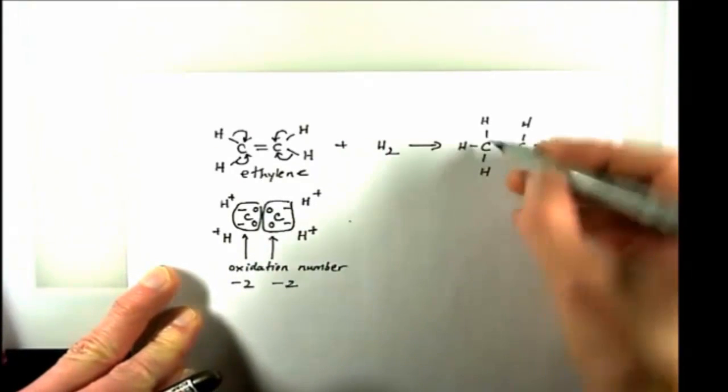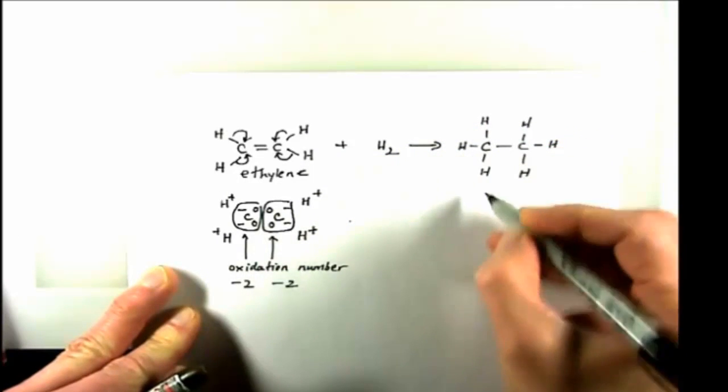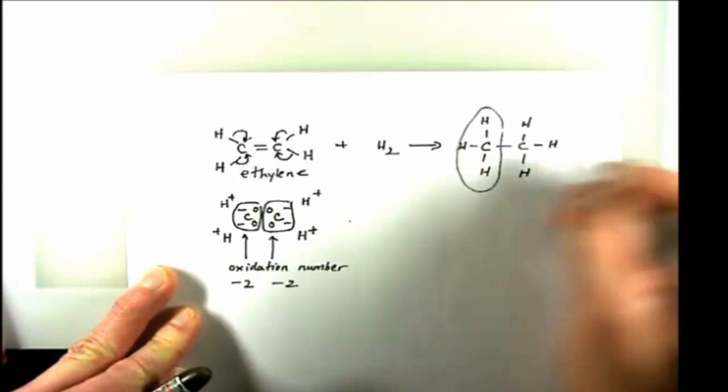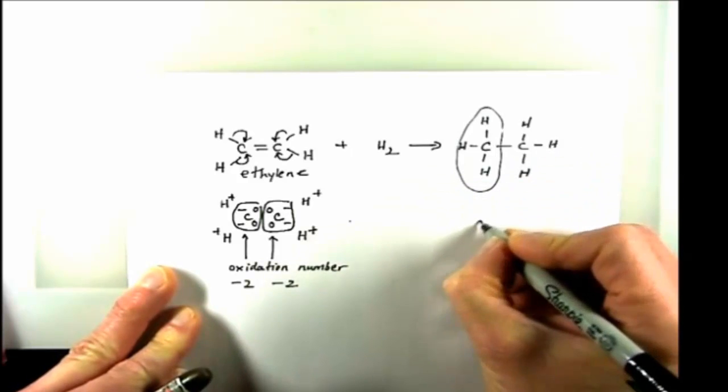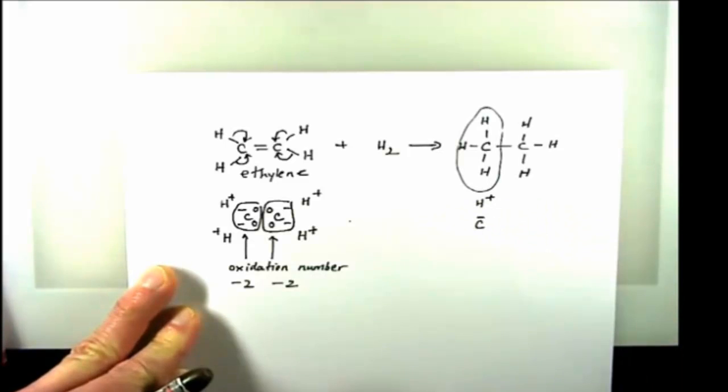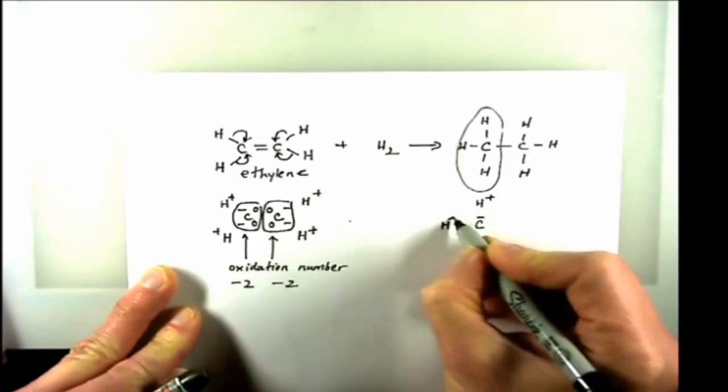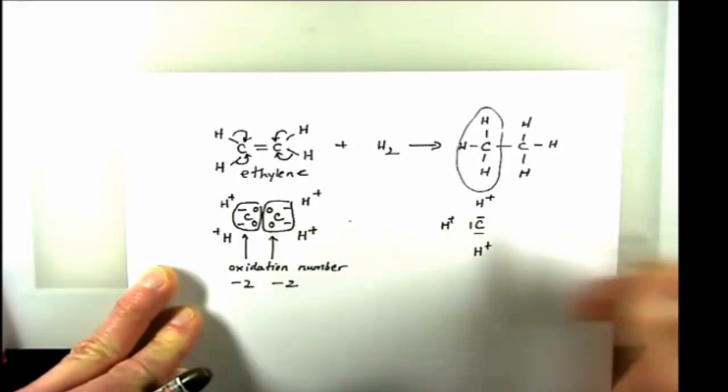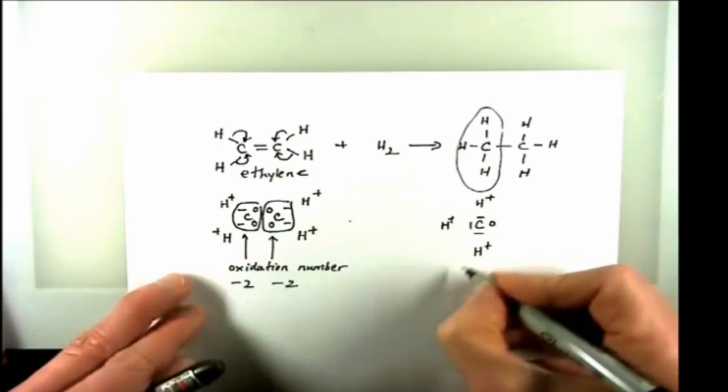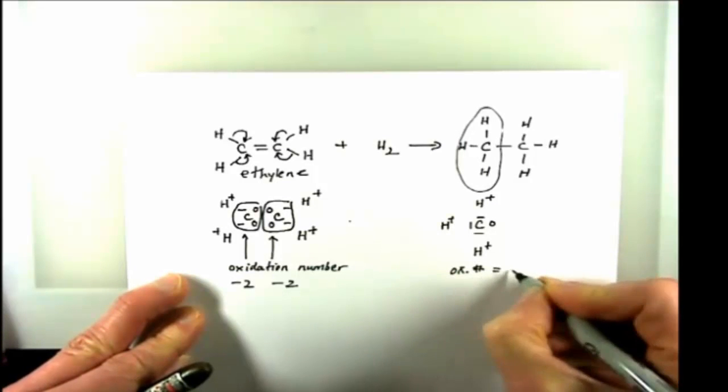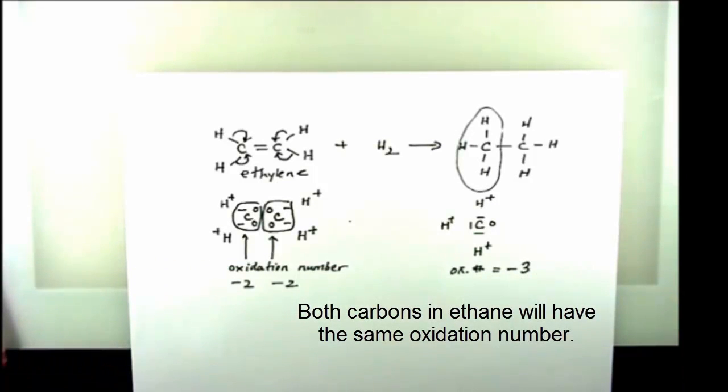If I continue over here, and I think about ethane here, the carbon that I have on the one side, there's going to be one of the C-H bonds broken, another C-H bond broken, another C-H bond broken, and then a zero. So I add those up, minus one, minus one, minus one, plus zero, minus three.